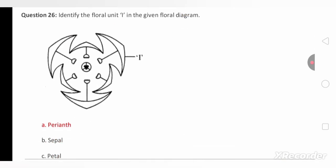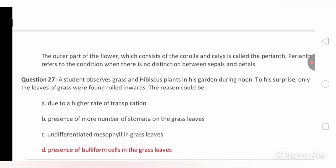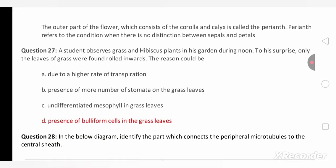Next: identify the floral unit I in this given representation of inflorescence flower diagram. The I represents perianth and you must remember that perianth consists of both corolla and calyx. Perianth refers to the condition when there is no distinction between sepals and petals.